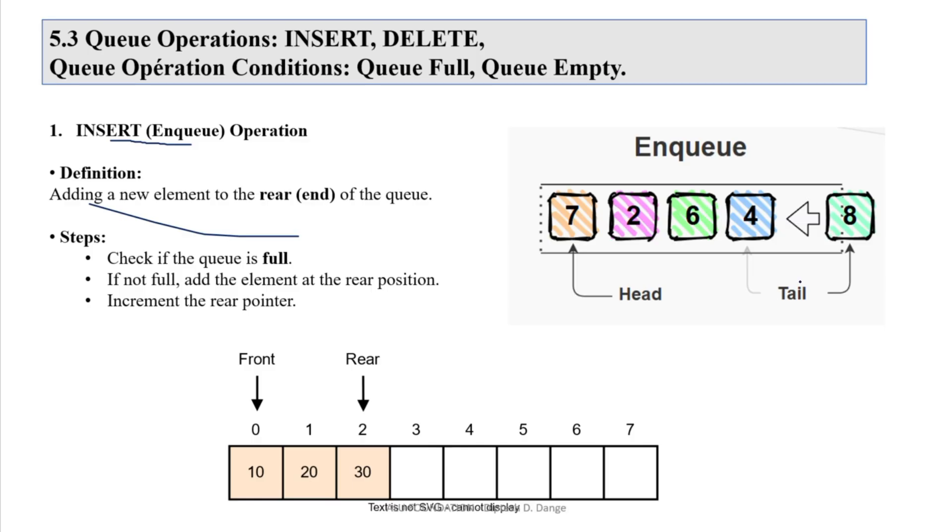So see, our tail is here. Basically, tail is also known as rear end. So tail is first here, 4 is pointing. Now tail is pointing to this 8.